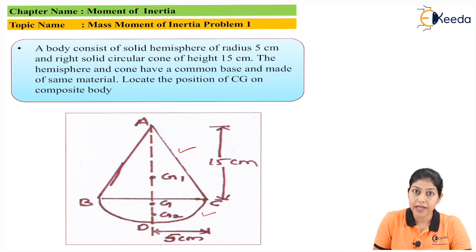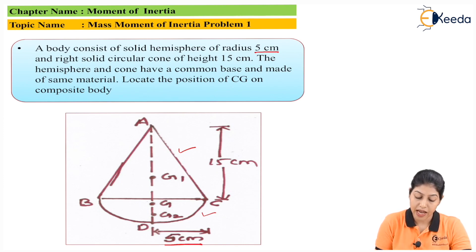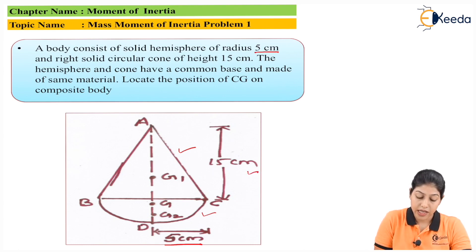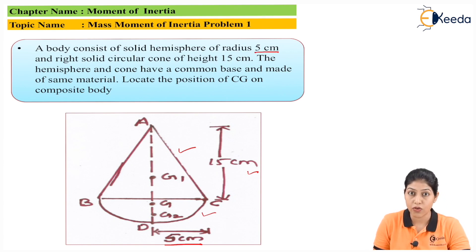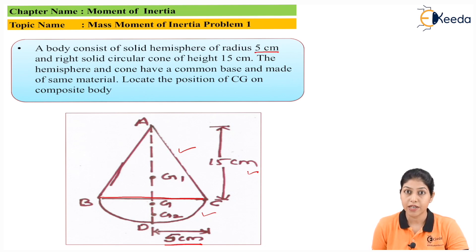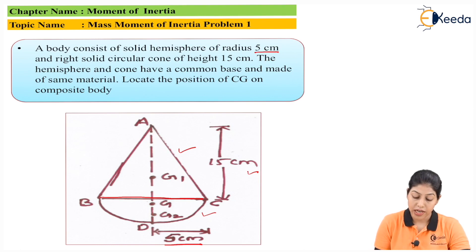For the solid hemisphere, the radius is 5 centimeter. The height of the solid circular cone is 15 centimeter. Since both solids share a common base, the radius of the solid circular cone is also equal to 5 centimeter. The hemisphere and cone have a common base, so their dimensions at the base are the same.